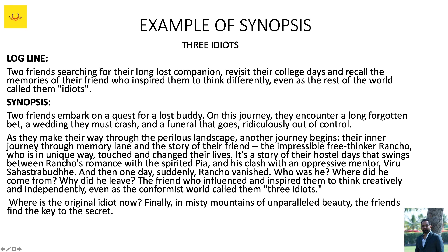Then one day, suddenly Rancho vanished. Who was he? Where did he come from? Why did he leave the friends who inspired them to think creatively and independently, even as the confused world called them three idiots? Where is the original idiot now? Finally, in the mist mountains of unparalleled beauty, the friends find the key to the secret. The ending is again asked as a question, and each component — protagonist, antagonist, action, and stake — is expanded.